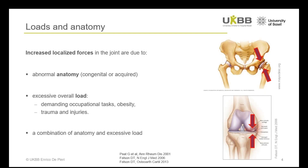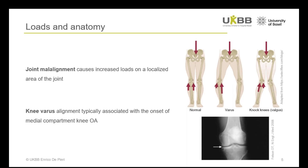However, this increase in forces is often determined by a combination of both factors. Joint malalignment is a common example of how these factors come into play, leading to localized excessive loads and damage to articular cartilage. For instance, knee varus alignment is associated with the onset of knee osteoarthritis and particularly with an increased force in the medial compartment of the knee, causing localized cartilage damage on the medial side.